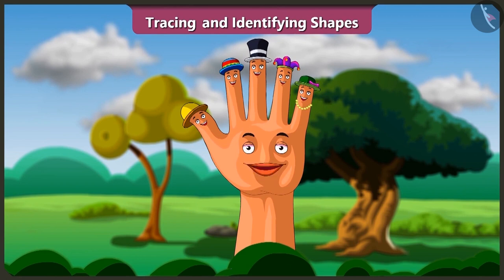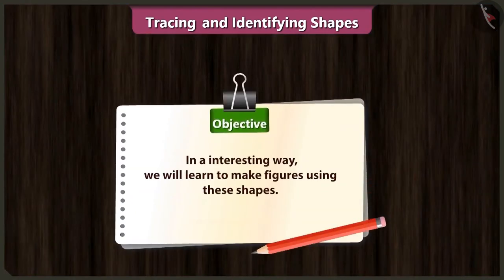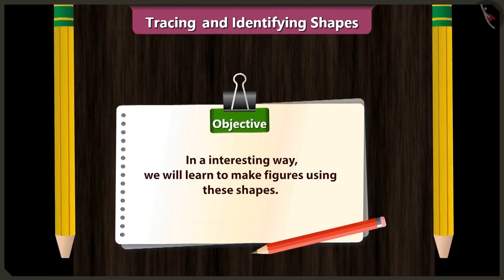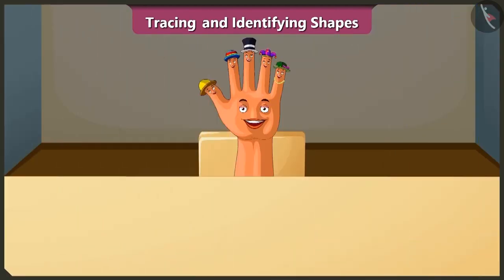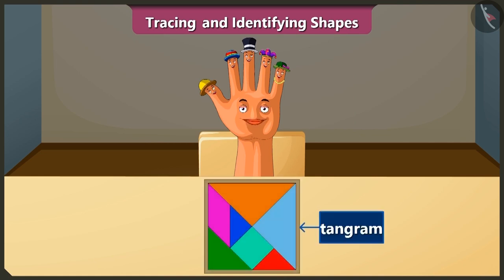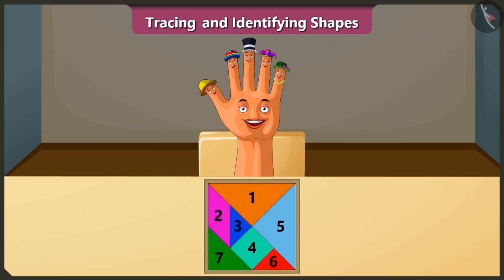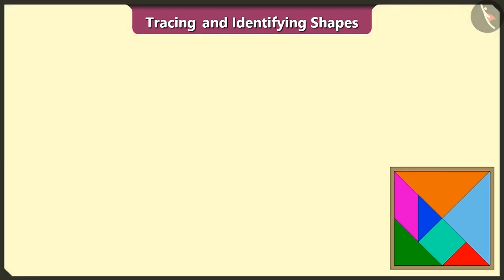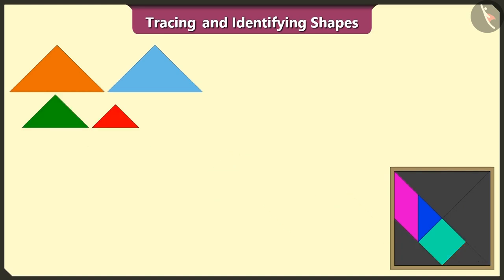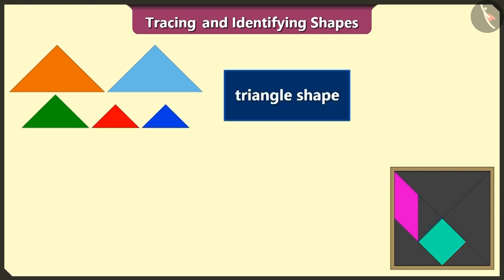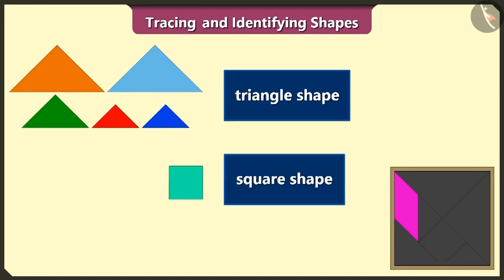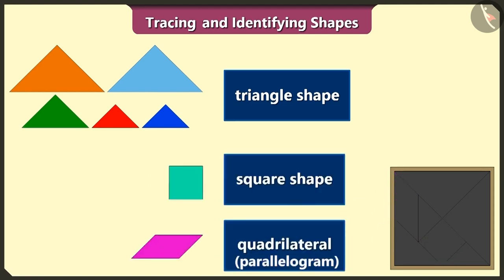Friends, we have learned to identify and trace shapes. Today, in an interesting way, we will learn to make figures using these shapes. This is a tangram — there are a total of seven shapes in it. This tangram is made of one, two, three, four, and five triangle shapes, one square shape, and one quadrilateral.